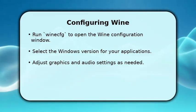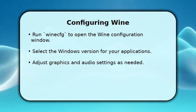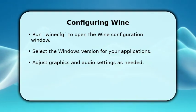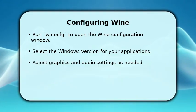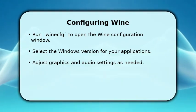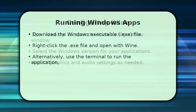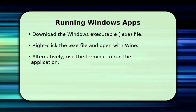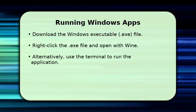Additionally, manage drive mappings to ensure your Windows programs can access necessary files. To run a Windows application, first download its executable file, typically ending in .exe. You can then simply right-click the .exe file and choose to open it with Wine.